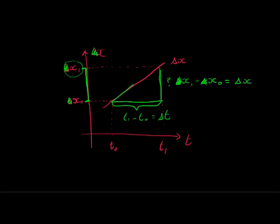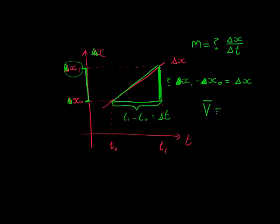The slope or gradient (m) of the graph — as you know from maths — is the change in the dependent variable divided by the change in the independent variable. That is Δx over Δt, which we know is velocity. So the gradient of the displacement-time graph tells us the velocity.